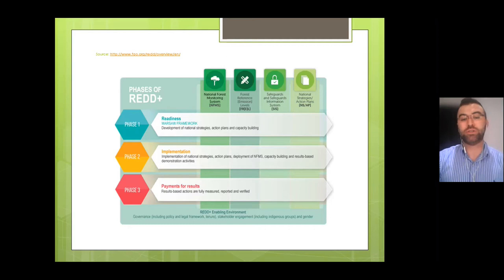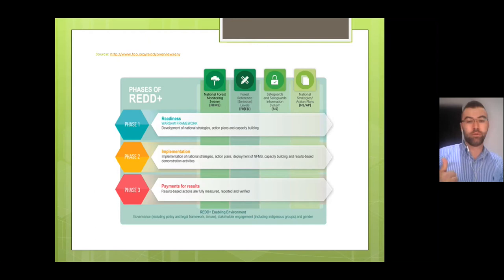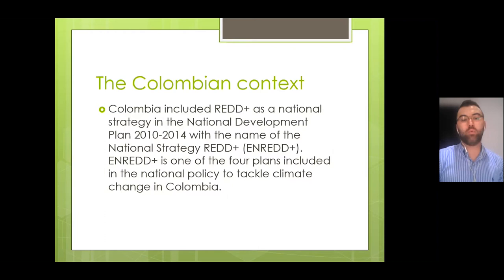This image describes the process to implement REDD+. It is a process which consists of three phases: readiness, implementation, and payment for results. Countries interested in implementing REDD+ have to fulfill the requirements of each phase. These phases are evaluated through four tools: the National Monitoring System, Forest References, the Safeguards Information System, and National Strategies and Action Plans.